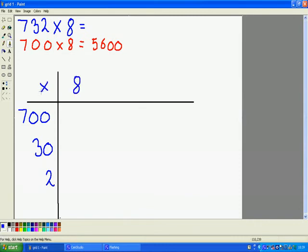So first of all, 700 times 8, so again 7 times 8 is 56. 700 times 8 is 100 times bigger, so it's 5,600.